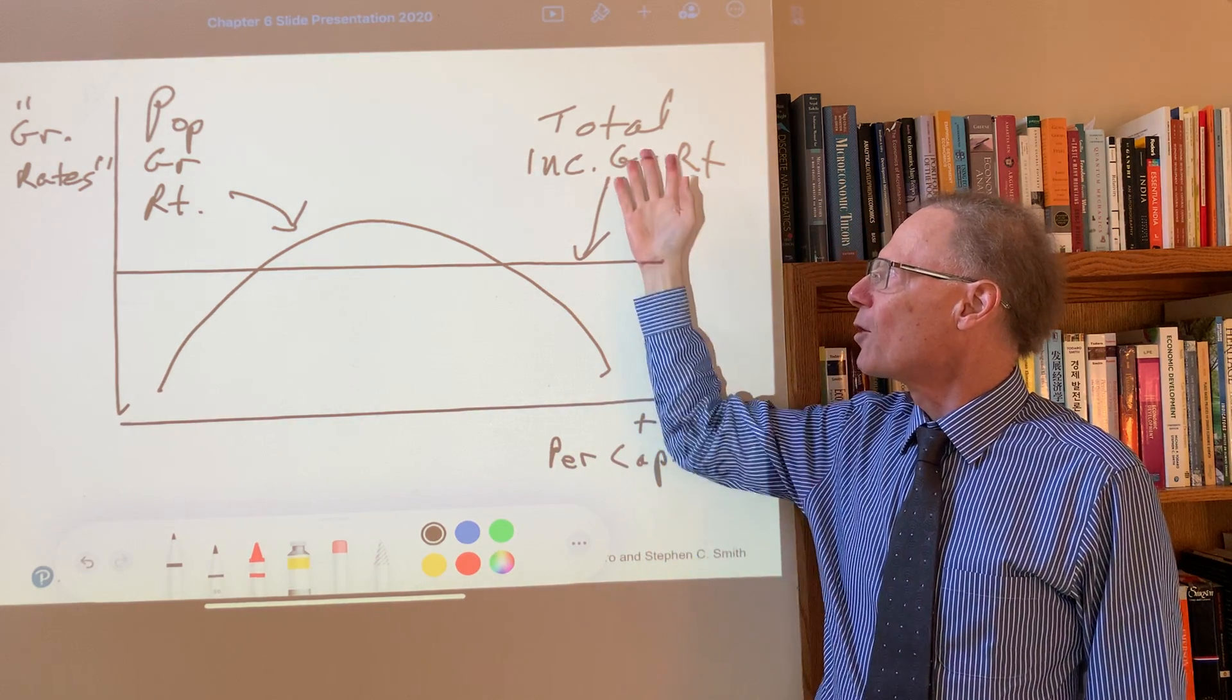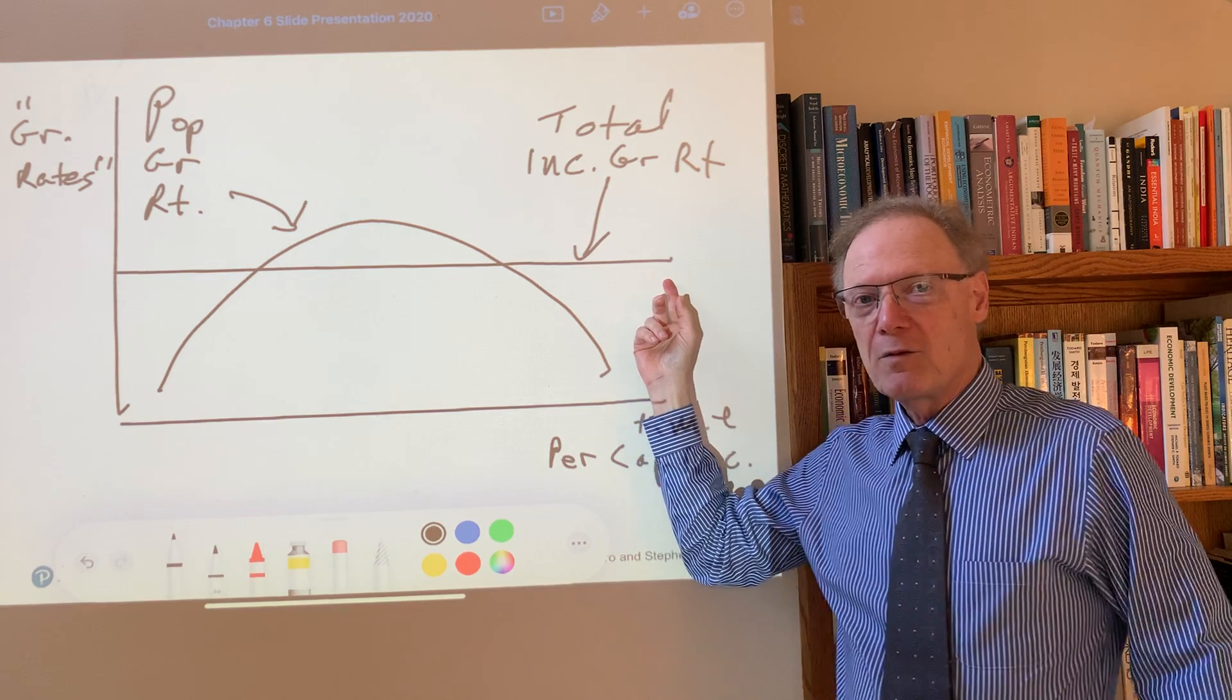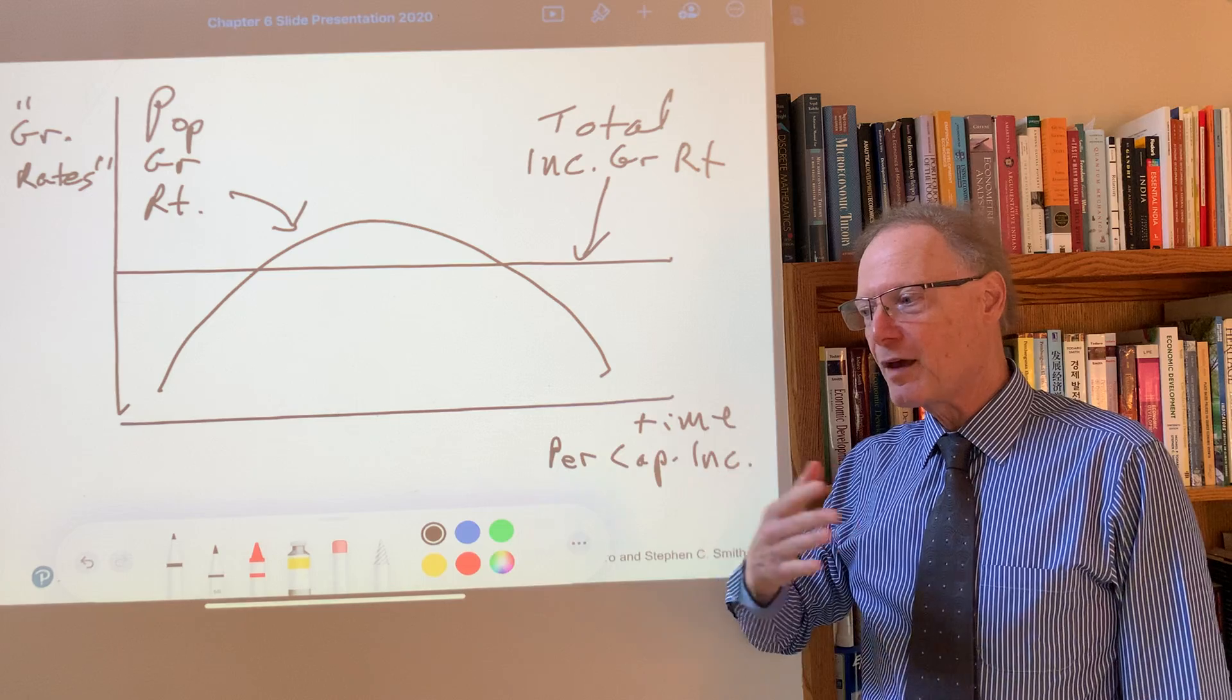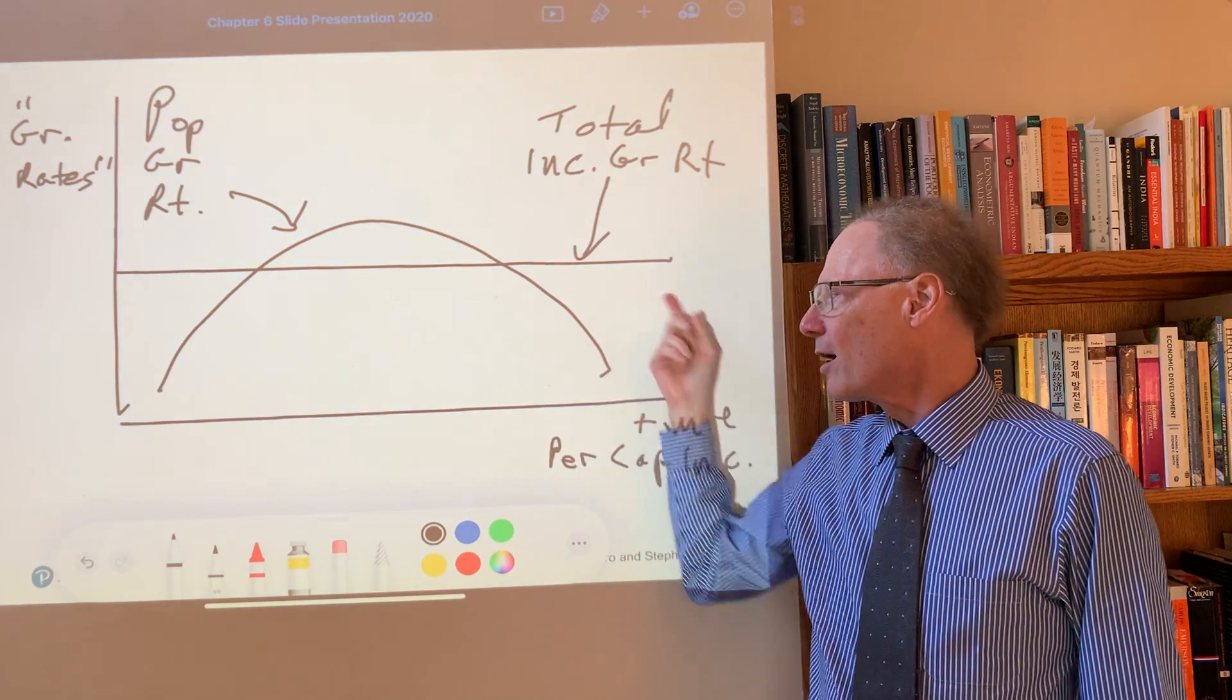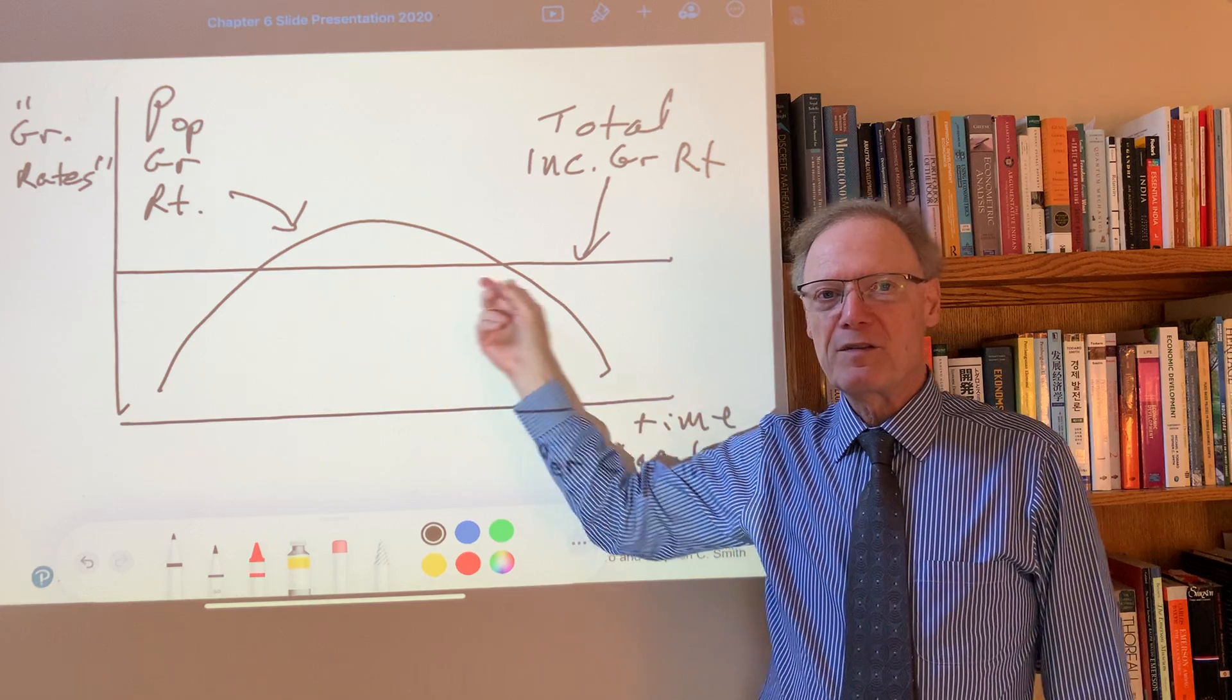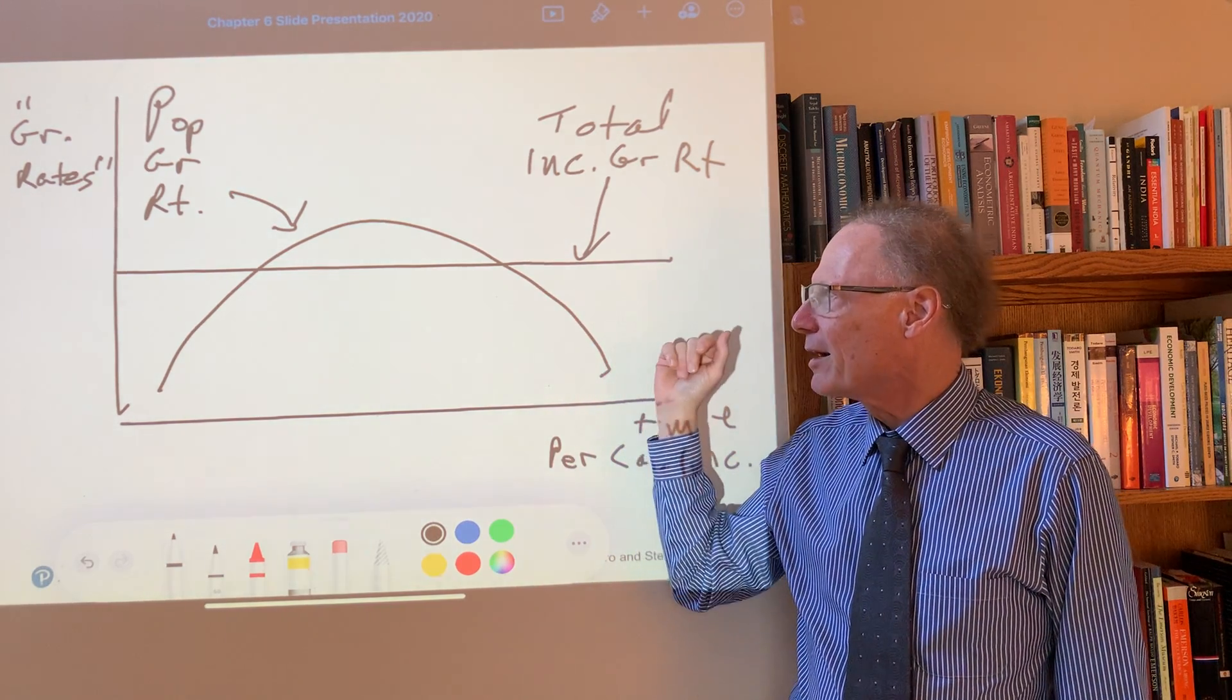This given constant total income growth rate could be the result of a Harrod-Domar model, in which nothing changes over time, in the sense the savings rate remains the same, depreciation rate remains the same, and the ICOR remains the same. It need not be, but it's just easy to write it down this way.